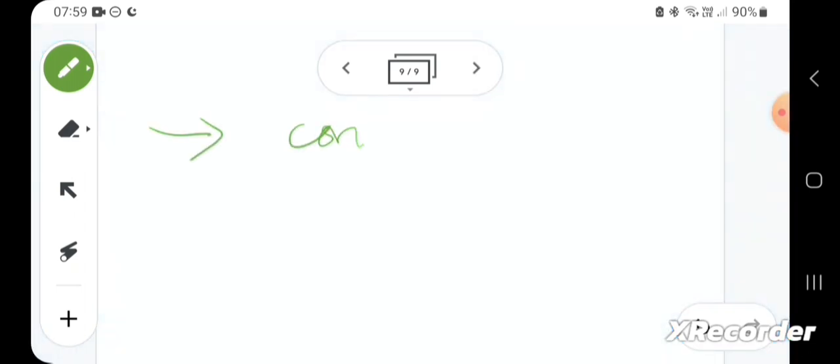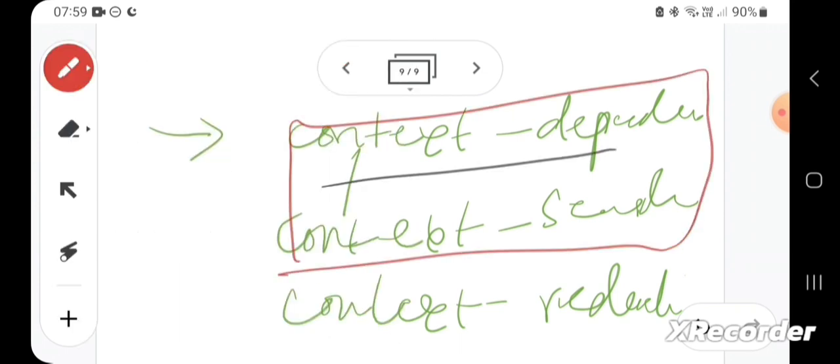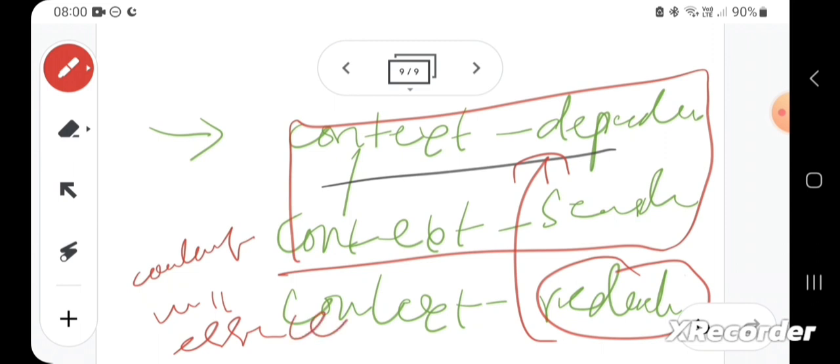So what Habermas differentiates between is context dependence, context sensitivity, but context reduction. So he accepts that all claims are context dependent, in the sense of context sensitivity, but they are not necessarily context dependent in the sense of context reduction, and that's because of this counterfactual moment, which is the sense of rationality as understood by Habermas as something which emerges within a space of reason created by a community of participants within argumentation.